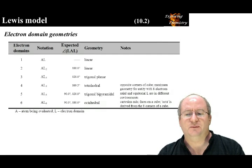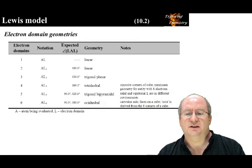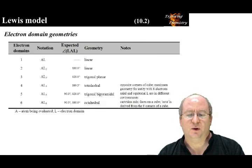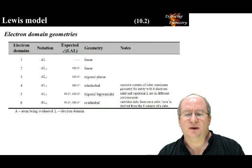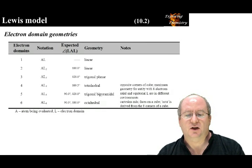The tetrahedral geometry can be visualized as opposite corners of a cube. With five electron domains, the geometry is trigonal bipyramidal. It is the only geometry with two different bond angles: 90 degrees and 120 degrees. With six electron domains, the geometry is octahedral, and the bond angle is 90 degrees. This geometry can be visualized as the Cartesian coordinates.